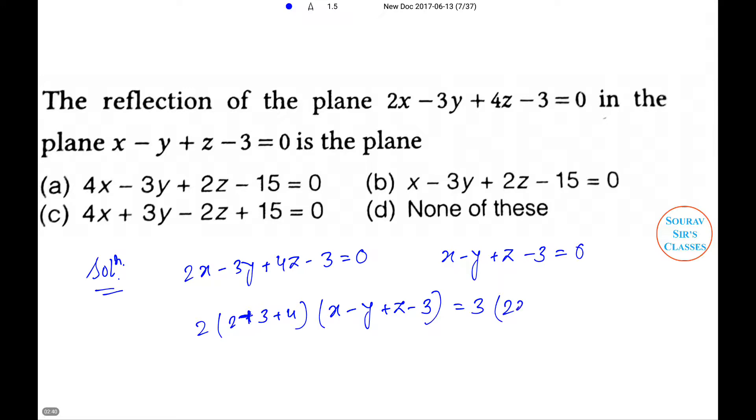That implies 4x minus 3y plus 2z minus 15 equals 0. So option A will be the right answer. Next problem.